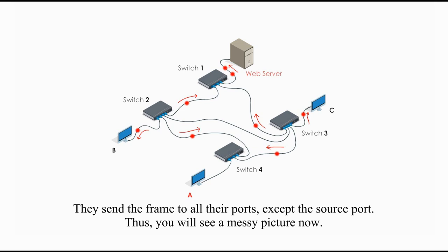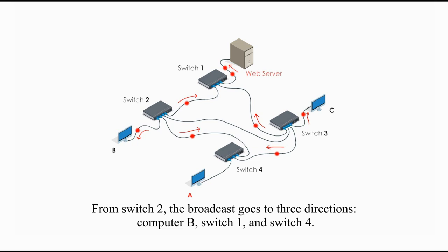Thus, you will see a messy picture now. From switch 2, the broadcast goes to three directions, computer B, switch 1, and switch 4. From switch 3, the broadcast goes to three directions, computer C, switch 1, and switch 4.